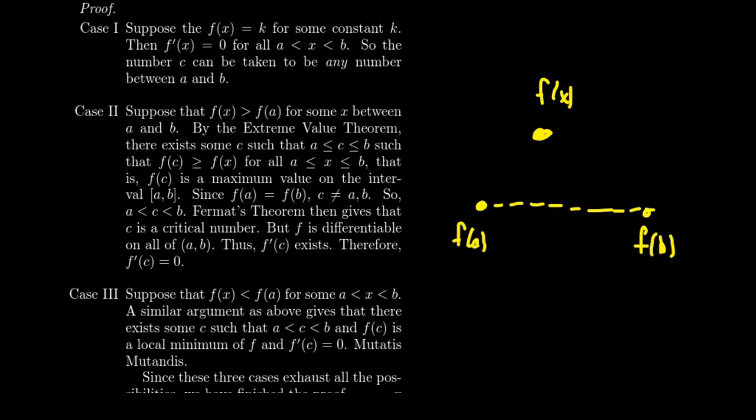And so we see that this c value cannot be equal to a, it cannot be equal to b. It's got to be something strictly between f(a) and f(b). And so that's what we're going to take here, this absolute maximum. We'll say it right here. This is our f(c) value. It's our absolute maximum. And it's distinct from the a and from the b because they can't be equal to that. Well, we also want to apply Fermat's theorem.